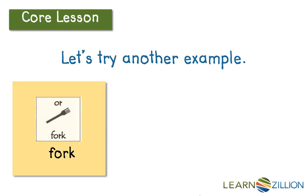Let's try it with another word. In this word, I see that it starts with a C, has the OR syllable in the middle, and ends with a D. I know that C makes the K sound, OR makes the OR sound like in fork, and D makes the D sound. When I blend those sounds together, I can read the word: C-OR-D. Cord. This word is cord.